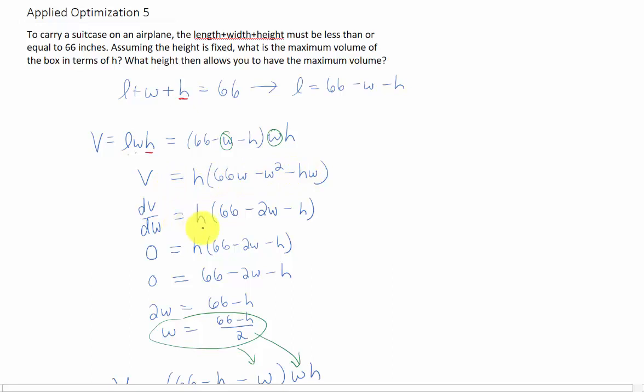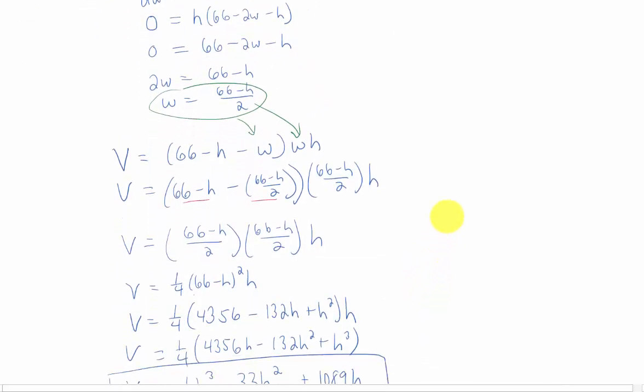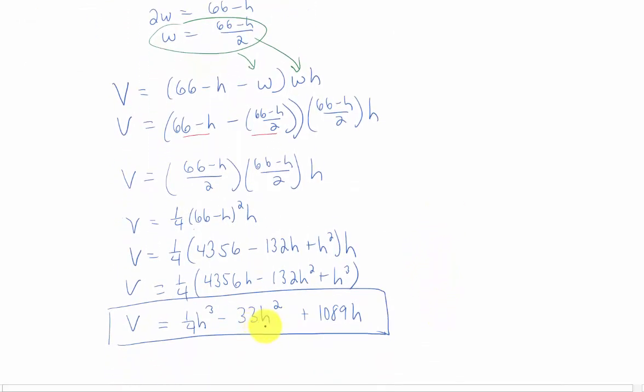We took a derivative and set that derivative equal to 0 to get the w, the width, that would maximize our volume. To find the actual volume, we had to take that width and plug it back into the original volume equation, which we then just did a whole bunch of algebra on to get this answer here. Now this is the maximum volume, assuming that h is a constant.